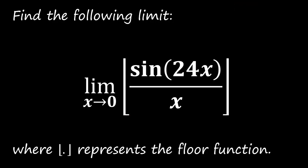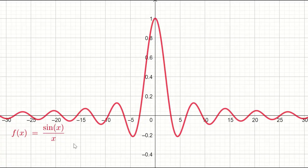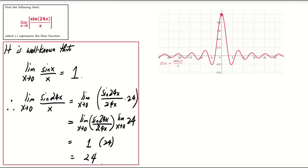So, does it mean our desired limit does not exist? Not necessarily. From the graph of y equals sine x over x, we observe that sine x over x is less than 1 for all x. Thus, sine 24x over x is less than 24 for all x.